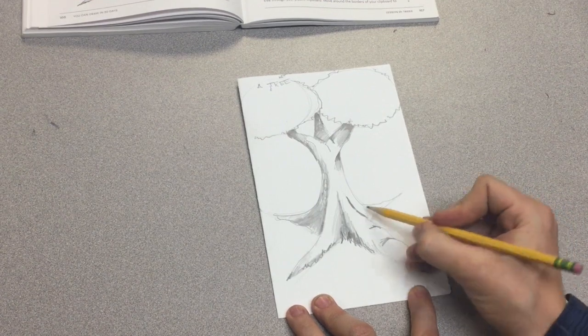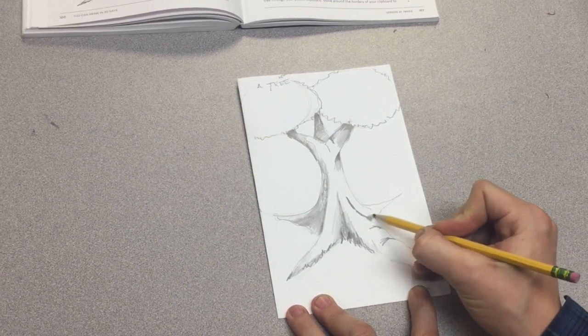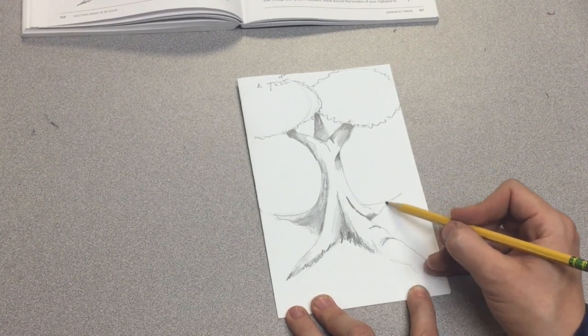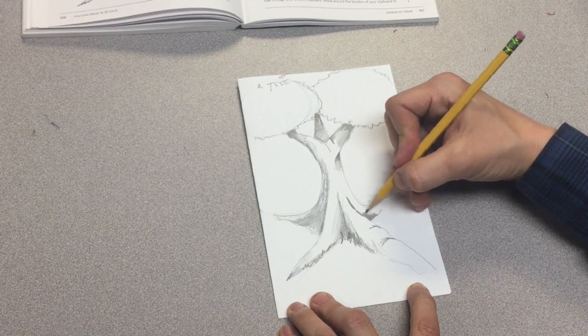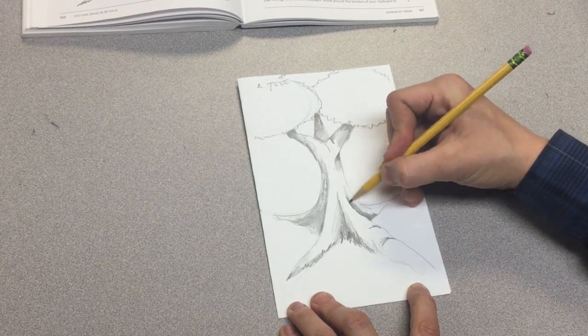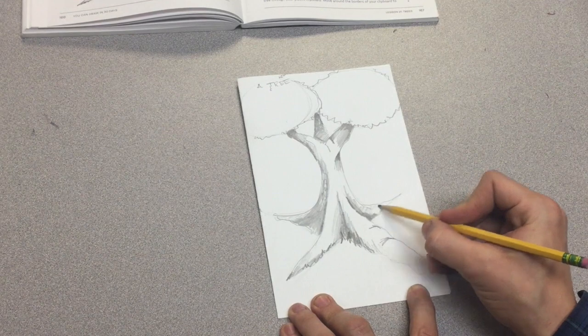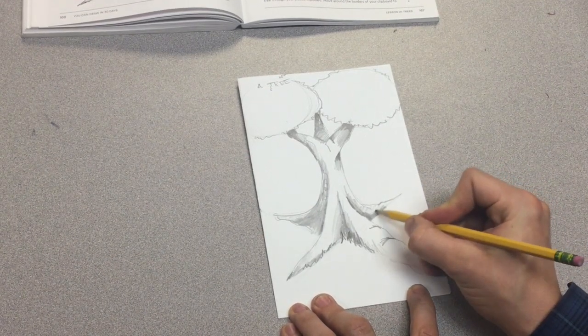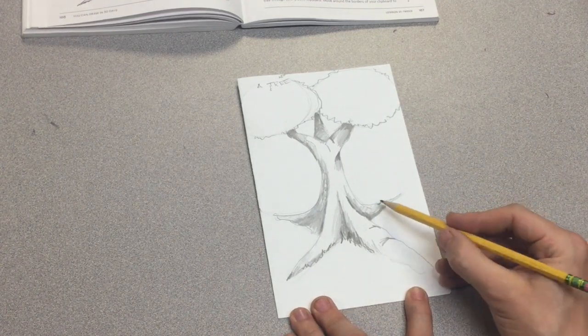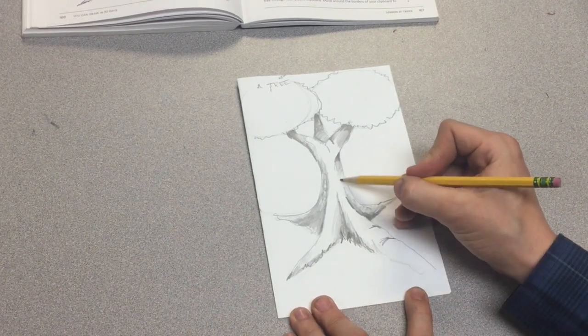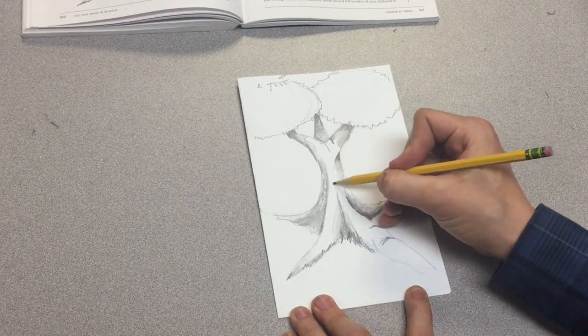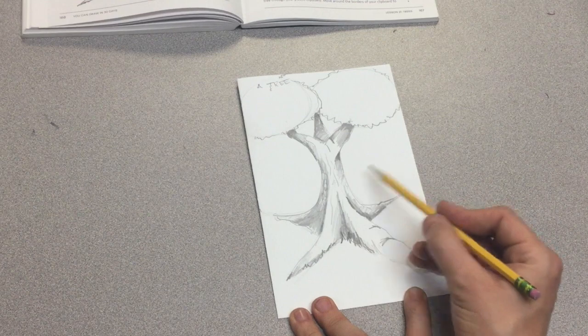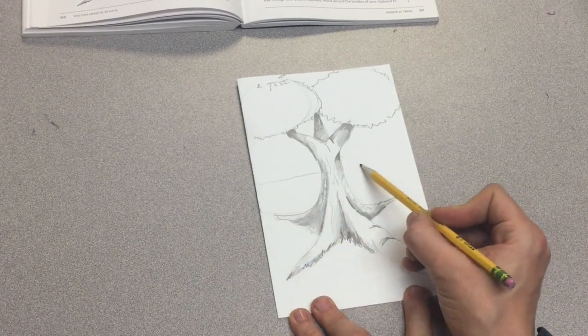I like to do the nook and cranny shadows. That shows a separation between this root and this root system behind it. So there's a nook and cranny shadow.